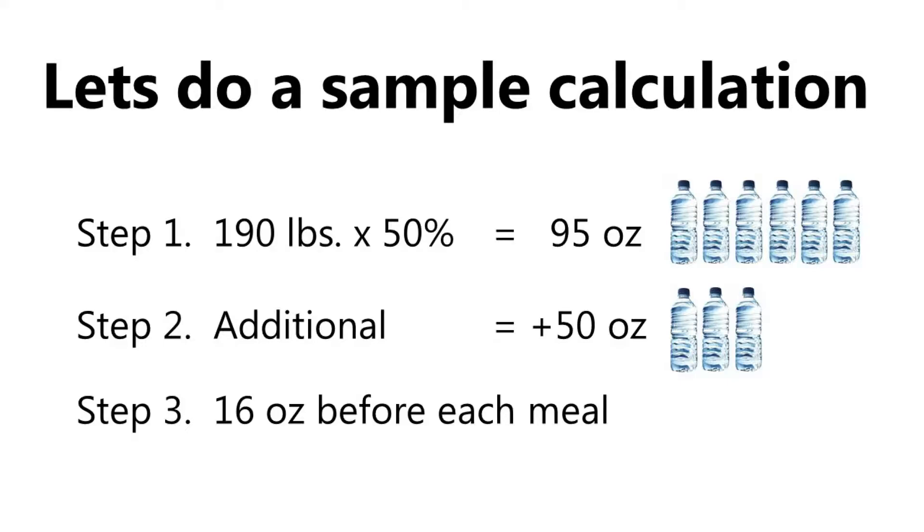For Step 3, we need to drink 16 ounces of water before each meal. That's one bottle before each of three meals, leaving six remaining 16-ounce bottles to drink throughout the day.